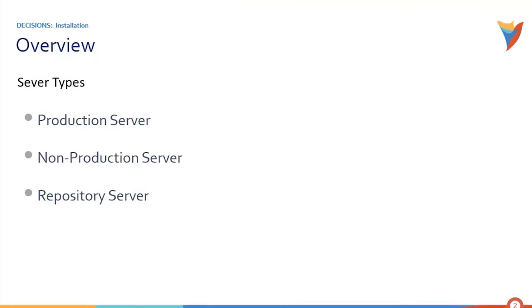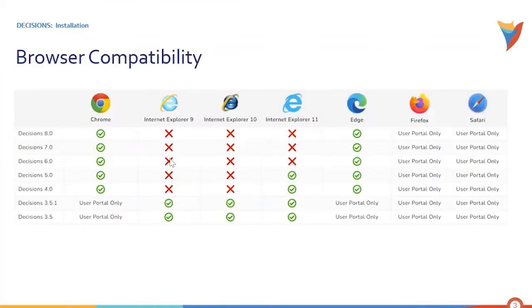Depending upon the type of usability, we can select the server we would like to install. Moving on to browser compatibility: Chrome and Microsoft Edge are recommended for building in the studio. When navigating into the studio to build or maintain projects, it is always recommended to use Chrome or Edge. Firefox and Safari only give us the ability to access the portal.